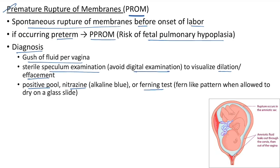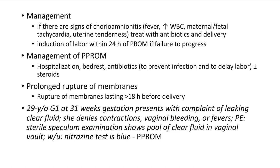Nitrazine test: if you add nitrazine to vaginal fluid you get alkaline blue color. Ferning test: vaginal fluid shows a fern-like pattern when allowed to dry on a glass slide. Management of PROM: if signs of chorioamnionitis (fever, elevated WBC, maternal or fetal tachycardia, uterine tenderness) — treat with antibiotics and delivery. Induction of labor should be done within 24 hours of PROM if there is failure to progress.